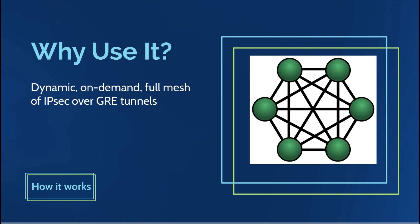Why would we use something like the dynamic multipoint VPN? It's great for hub-and-spoke type of VPN environments where we have a central hub headquarters and then branch office after branch office. As I record this, we are in the middle of the coronavirus pandemic, and you can imagine the remote office locations needed to accommodate the new work-at-home life. Think about the workload of provisioning all of these circuits for the hub-and-spoke virtual private network.